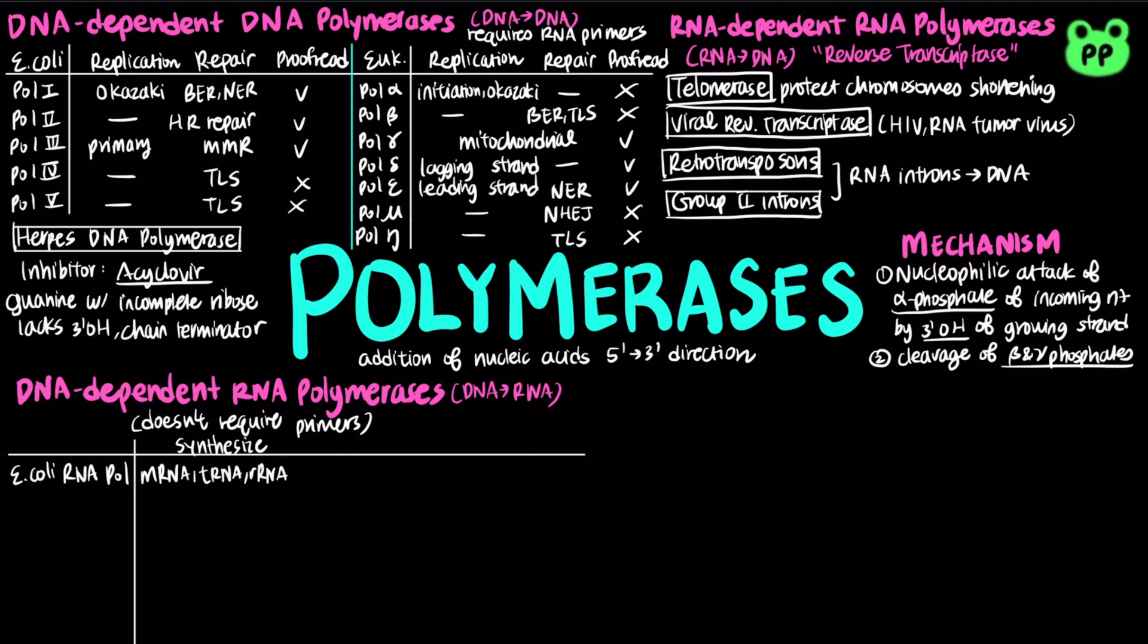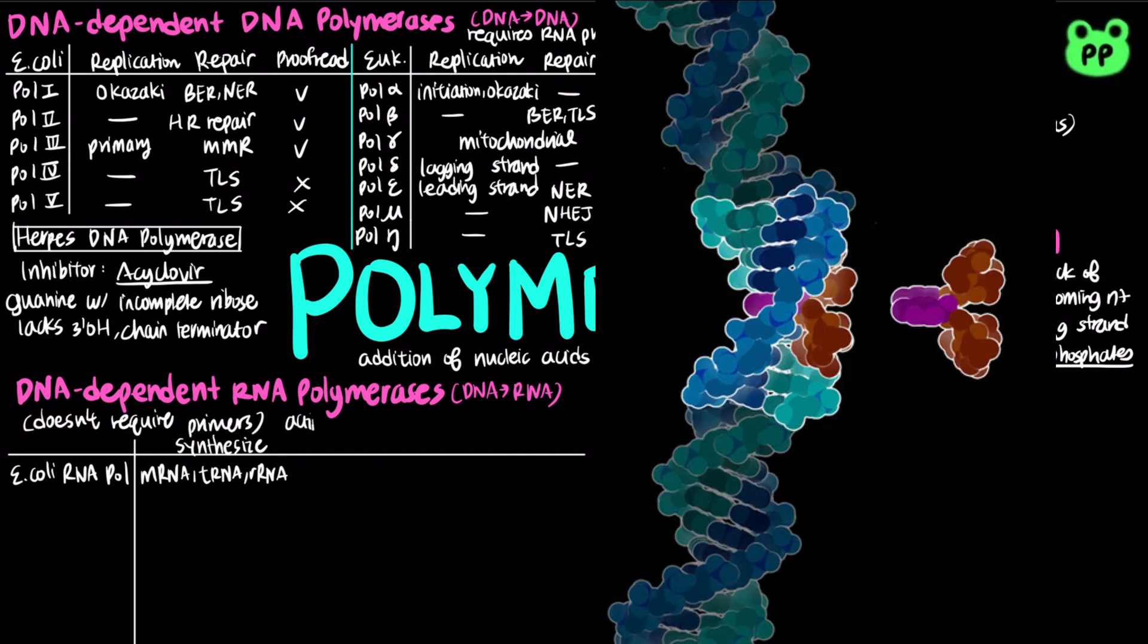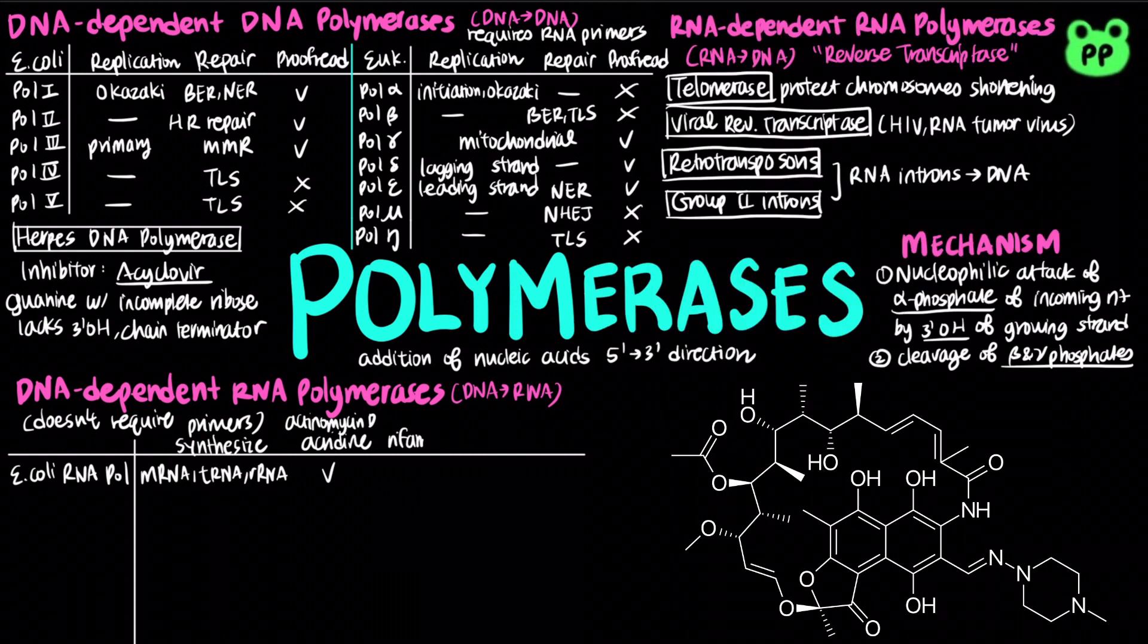Bacterial RNA polymerase is inhibited by actinomycin D and acridine, which intercalate double-stranded DNA and prevent the movement of polymerase along the template. It is also inhibited by rifampicin, by preventing promoter clearance.